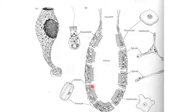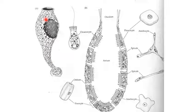This diagram shows the basic structure of a sponge — like a flower vase. It has a central cavity called the spongocoel, and a single opening at the top called the osculum.